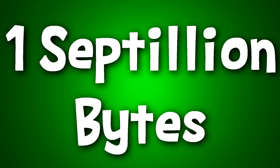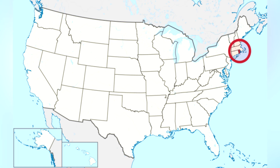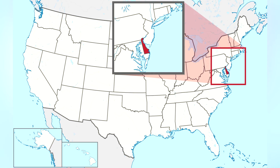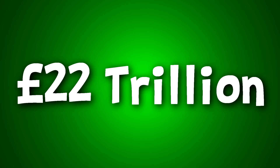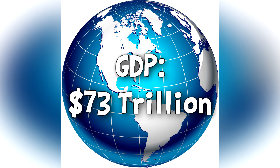Now we're moving into the crazy stuff. We are on to yottabytes — this is a thousand zettabytes, or one septillion bytes. This would fill over a million data centers, which would fill up the whole of Rhode Island and Delaware. The cost would be absolutely astronomical, at about £22,000,000,000,000. To put that into perspective, the world's GDP is approximately $73,000,000,000,000.